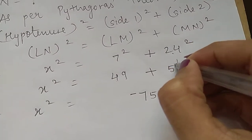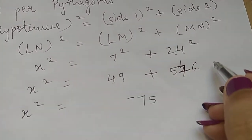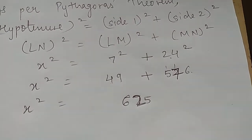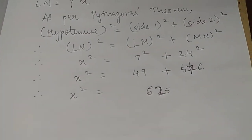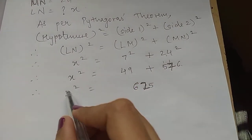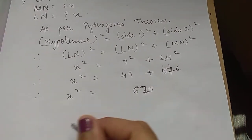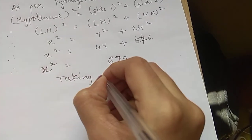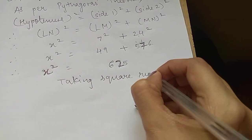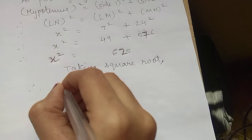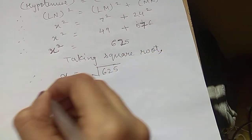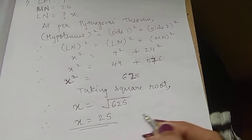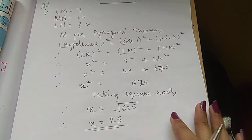Sorry, 24 square is 576. So x square equals 49 plus 576, which is 625. Now we have to find the value of x, not x square. So to remove the square, we take the square root. x square becomes x and the square root of 625 is 25. That's the value of x.